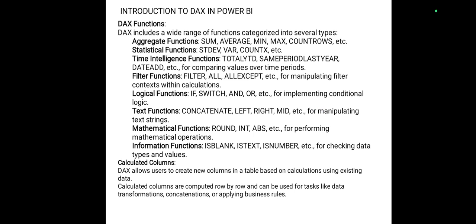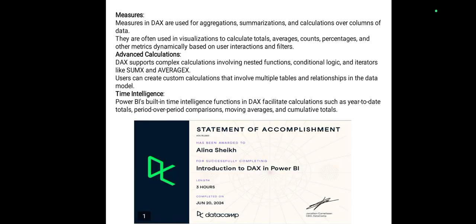Introduction to DAX in Power BI. DAX functions include: Aggregation Functions such as SUM, AVERAGE, MINIMUM, MAXIMUM, COUNT; Statistical Functions; Time Intelligence Functions; Filter Functions; Logical Functions; Text Functions; Mathematical Functions; and Information Functions. These are used to calculate measures and support advanced calculations including time intelligence.